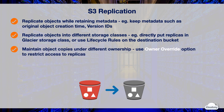You can maintain objects' copies under different ownership. Regardless of who owns the source object, you can tell S3 to change the replica's ownership to the AWS account that owns the destination bucket. This is referred to as the Owner Override option. You can use this option to restrict access to object replicas.